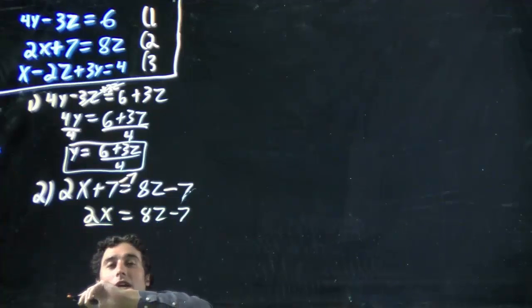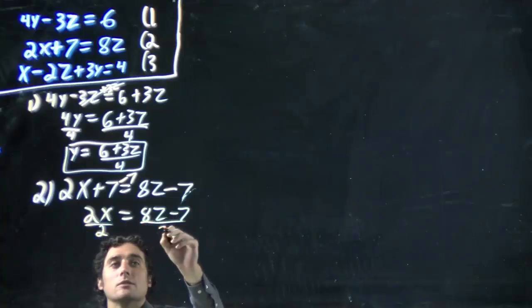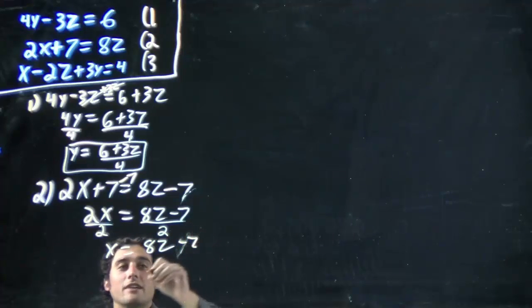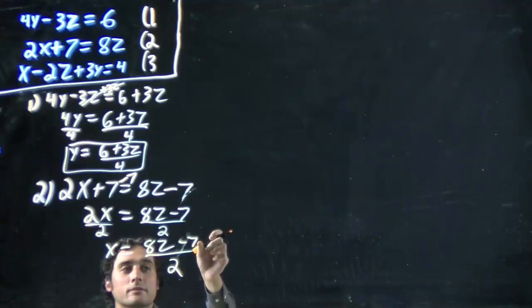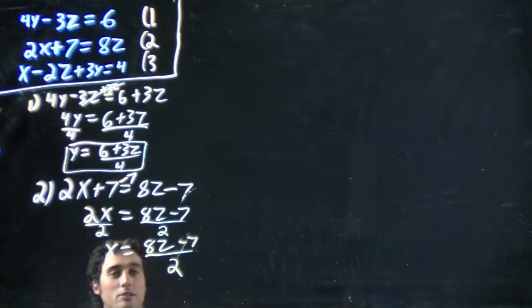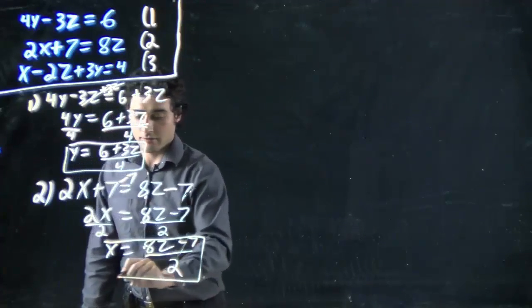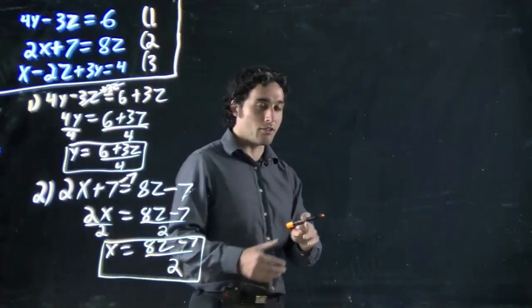2x equals 8z minus 7. We've got to get rid of 2, divide both sides by 2. x equals 8z minus 7 all over 2. A few smudge prints, but hey, still hopefully right. Doesn't have to be pretty, it just has to be correct on this one.